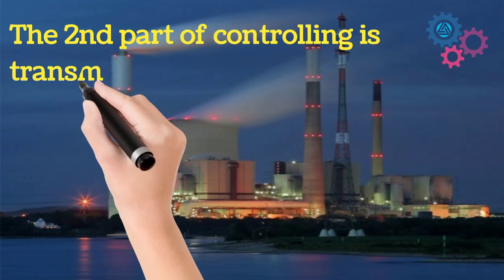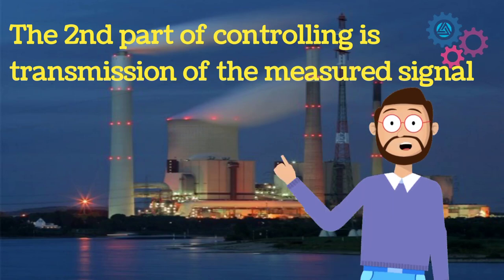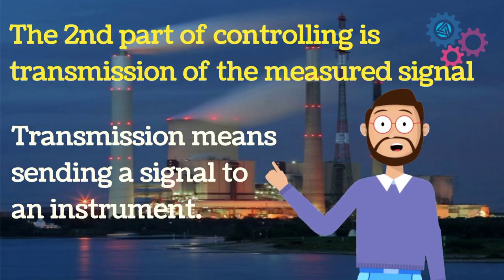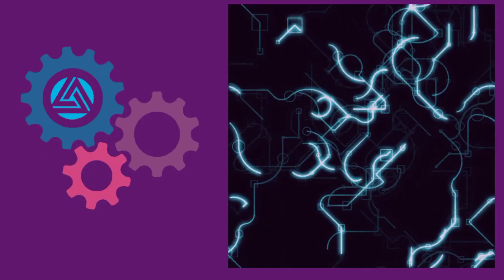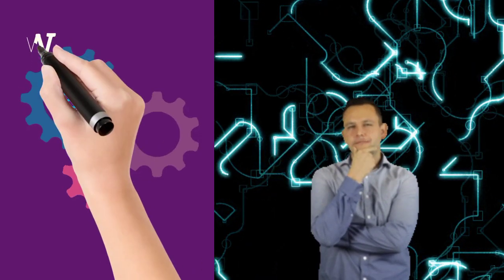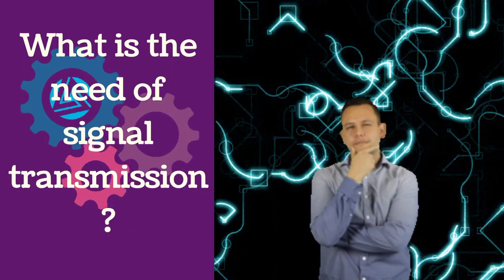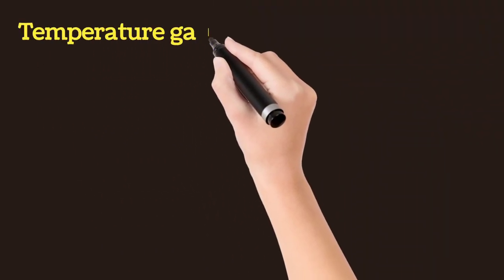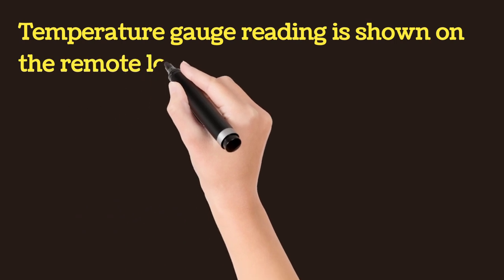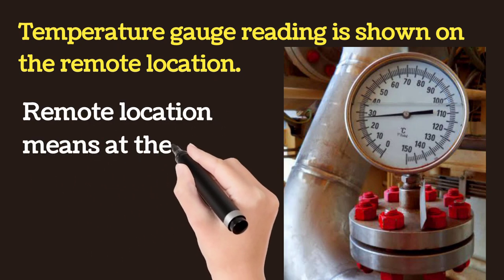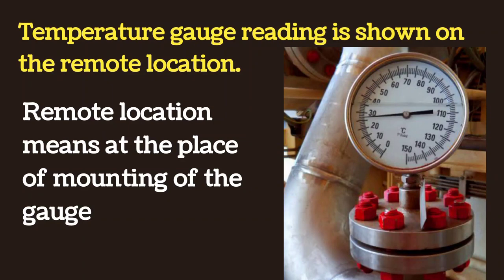The second part of controlling is to transmit the measured signal. Transmission means to send the measured signal to an instrument. Now we will discuss the need of signal transmission — why we transmit a measured signal. A temperature gauge shows its reading at the remote location, meaning the place at which the temperature gauge is mounted.